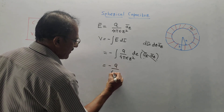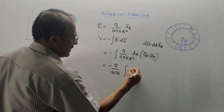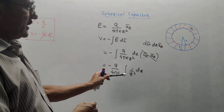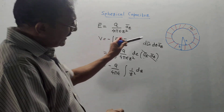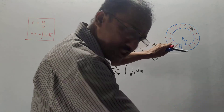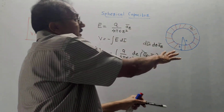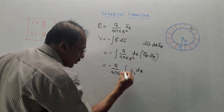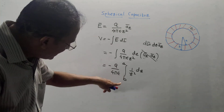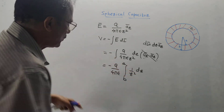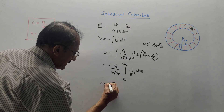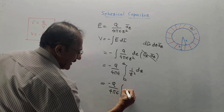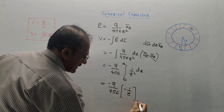The important part: the limits of integration go from the outer sphere to the inner sphere — from the larger value to the smaller value — so the limits are b to a. The integral of 1/r² is −1/r, evaluated from b to a.